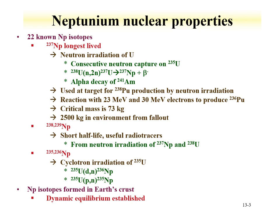Neptunium has 22 known isotopes. The longest-lived is neptunium-237, which can be produced two ways in the nuclear fuel cycle. One is consecutive capture on uranium-235: U-235 captures a neutron and instead of fissioning, in a smaller percentage of the time it captures to form uranium-236. Uranium-236 is also long-lived and can capture a neutron to create uranium-237, which then beta decays to neptunium-237.